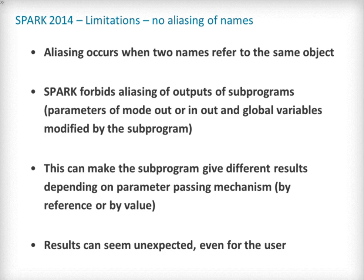Another restriction imposed in the Spark subset concerns aliasing. We say that two names are aliased if they refer to the same object. Since access types are not allowed in Spark, aliasing can only occur as part of the parameter passing in a procedure call. As a consequence, when a procedure is called, Spark makes sure that no OUT or IN OUT parameter is aliased with either another parameter of the procedure or a global variable updated in the procedure's body.